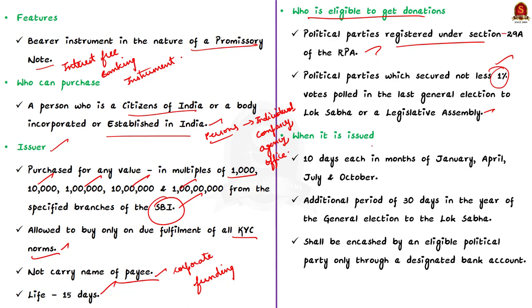The bonds under the scheme shall be available for purchase for a period of 10 days each in the months of January, April, July, and October. An additional period of 30 days shall be specified by the Central Government in the year of the general election to the Lok Sabha.